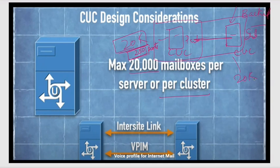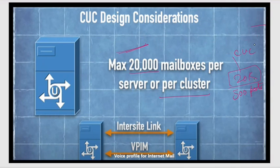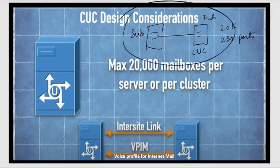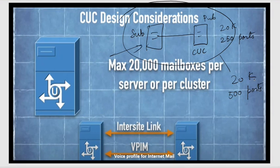To summarize: one CUC server supports 20,000 users and 250 simultaneous ports. If you add one subscriber, the number of users still remains at 20,000, but the ports get doubled to 500. So when you add a subscriber, your ports double. The advantages of adding a subscriber are increased port capacity and backup redundancy.